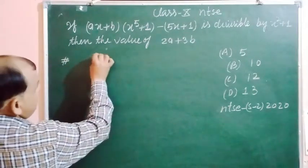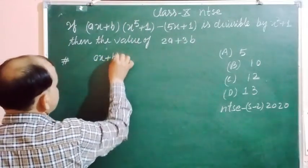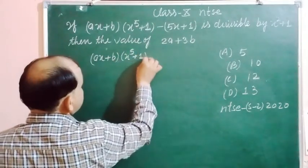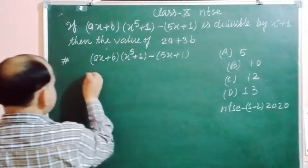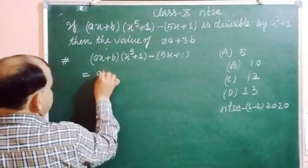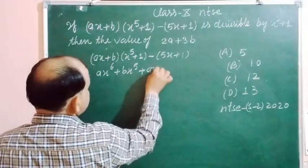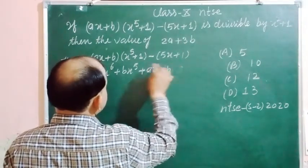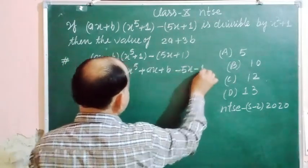In this question it is given that (AX + B)(X⁵ + 1) minus (5X + 1). We simplify it: this is AX⁶ + BX⁵ + AX + B minus 5X minus 1.